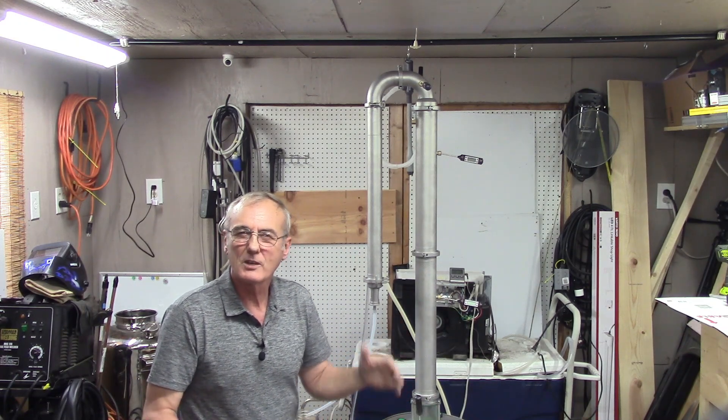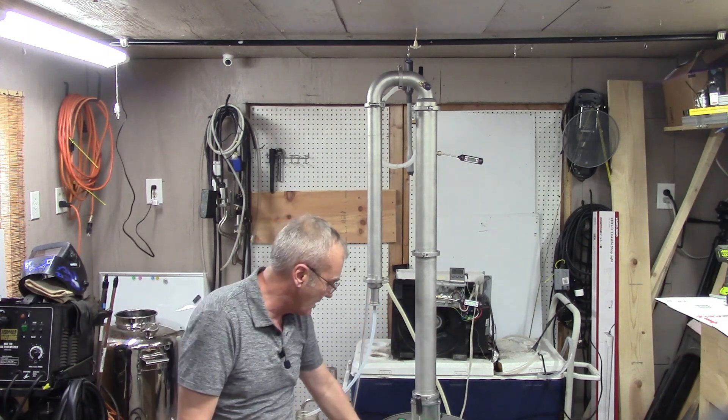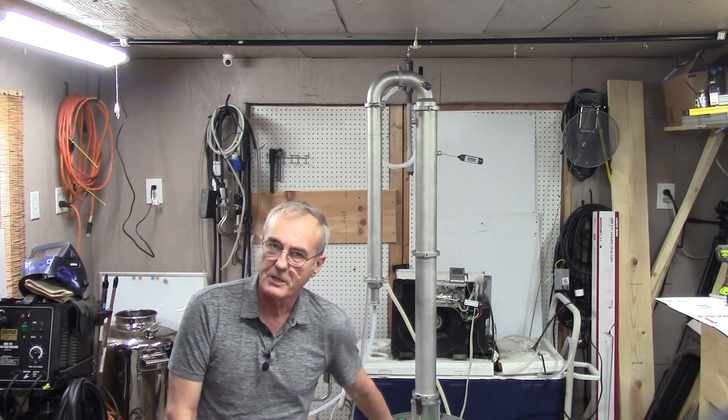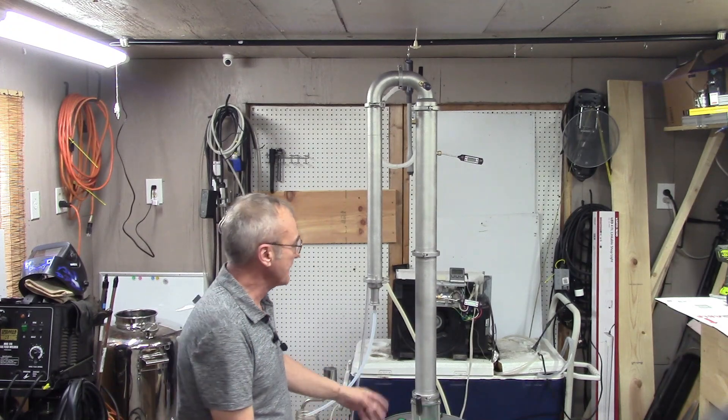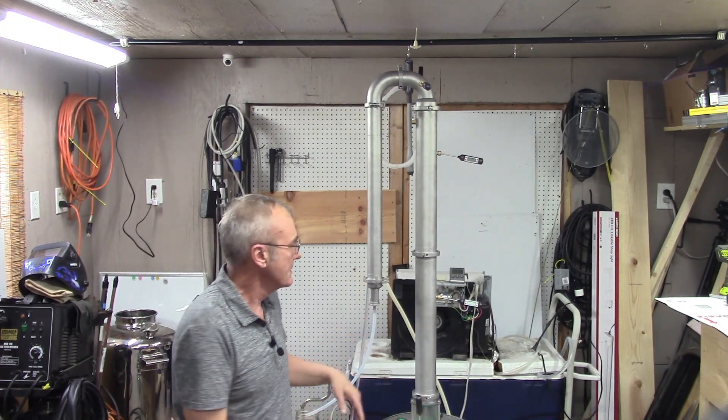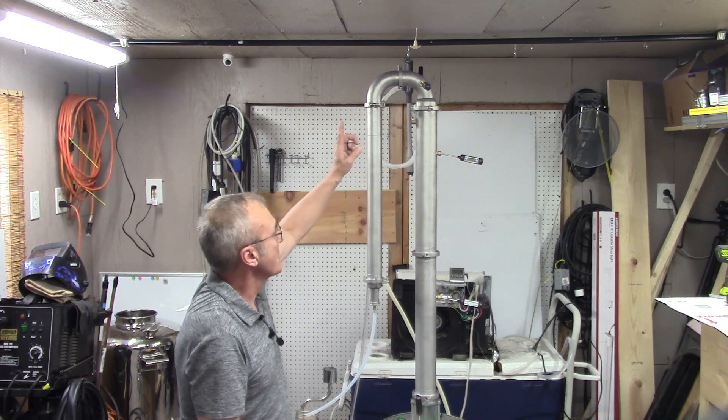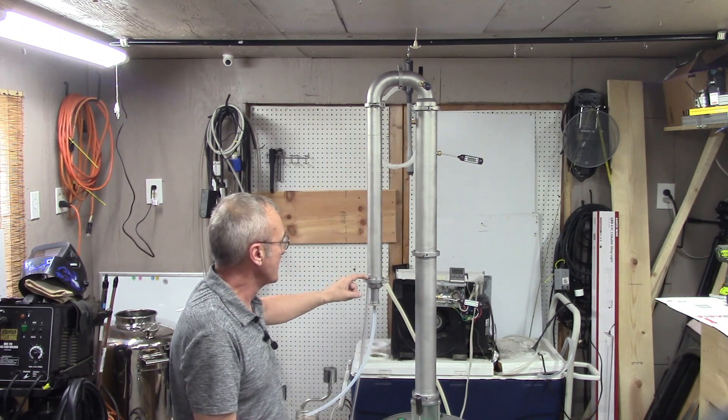We're gonna run this. I'm gonna do like a strip and run. I put eight gallons of sugar wash, a little bit over eight gallons, and I'm gonna run this through this three-inch column with this two-inch shotgun condenser.